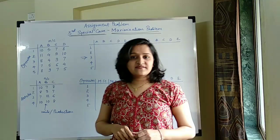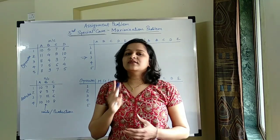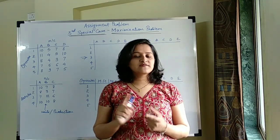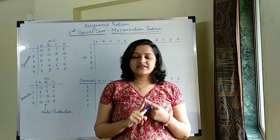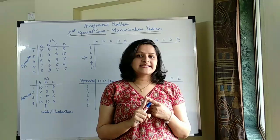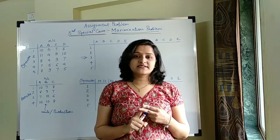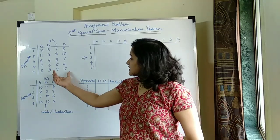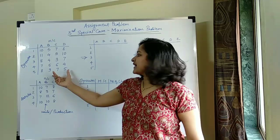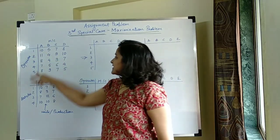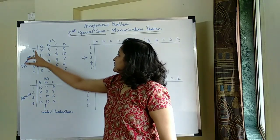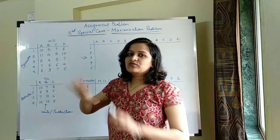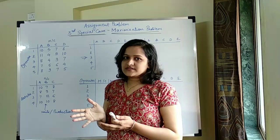As we have seen, there are two basic criteria to be fulfilled in the Hungarian method. First, the matrix should be balanced, and second, it should be of minimization type. So is it a balanced matrix? No. Why? Because there are 5 rows and 4 columns, so we have to balance it first.